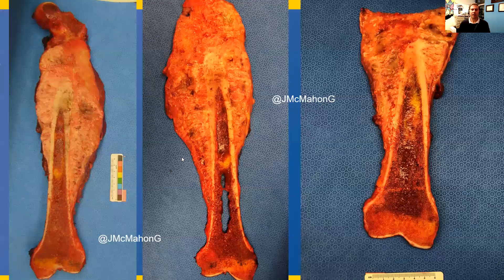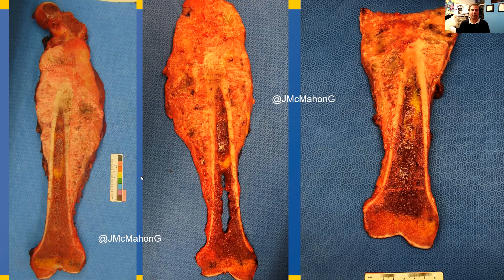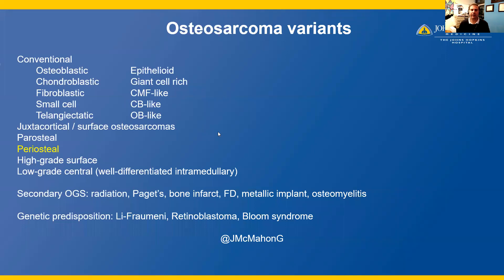This tumor underwent neoadjuvant chemotherapy. We see this surface-based chondroblastic neoplasm, which is a periosteal osteosarcoma. This cut section of the gross specimen shows how this mass — similar to the radiographs — is quite large and is arising on the surface of the bone, and does not involve the central portion of the medullary cavity. So we have a periosteal osteosarcoma, which is an intermediate-grade osteosarcoma.